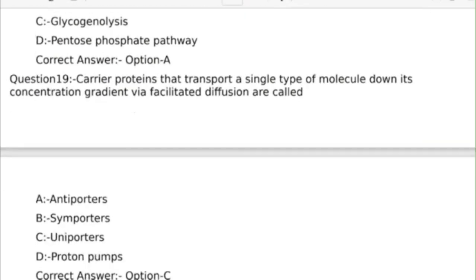Nineteenth question: Carrier proteins that transport a single type of molecule down its concentration gradient via facilitated diffusion are called? Answer options: Option A, Antiporters; Option B, Symporters; Option C, Uniporters; Option D, Proton pumps. Correct answer: Option C, Uniporters.